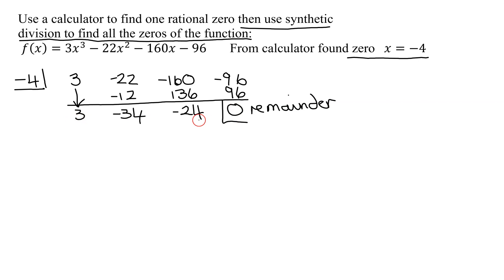And this is my quotient. Since I started out with an x cubed term, this will be an x squared term, and this will be an x term. So my quotient is going to be 3x squared minus 34x minus 24. And so we're going to set that equal to 0 to find our remaining zeros.